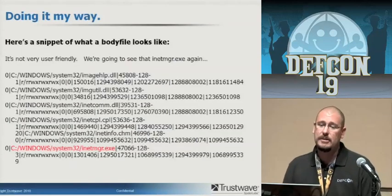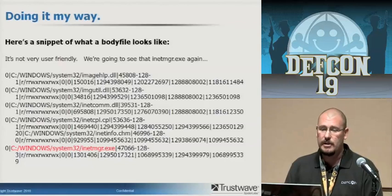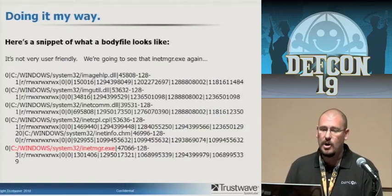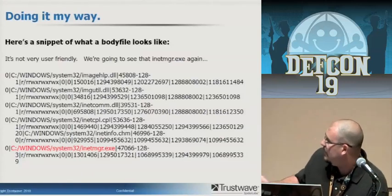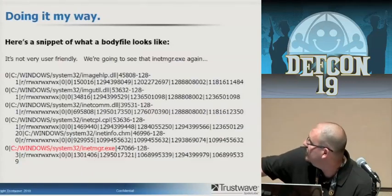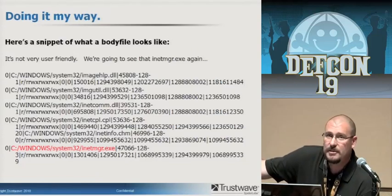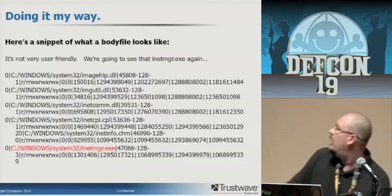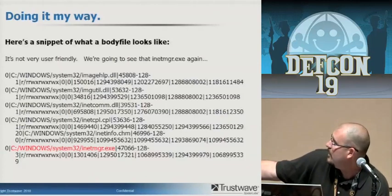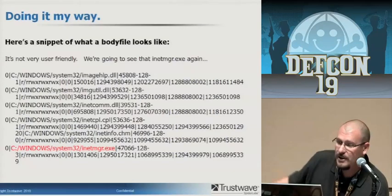Here's what a body file looks like — and it's admittedly ugly. It's not user-friendly at all. You'd actually have to know how many seconds from 1969 or 1970 these numbers represent for each timestamp. So obviously that's not something you want to look at and try to use. Something interesting to note on this slide: I have highlighted in red an inetmanager executable — we're going to see that again in just a second.